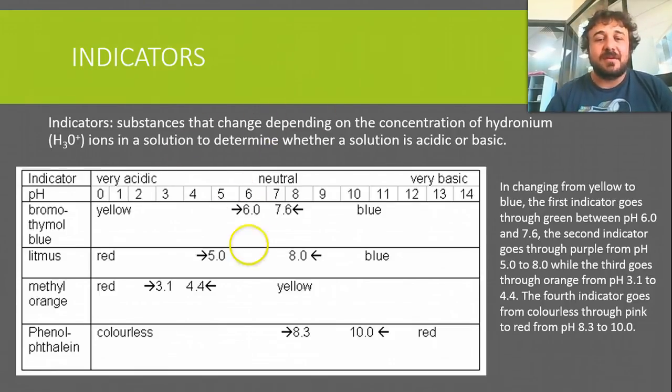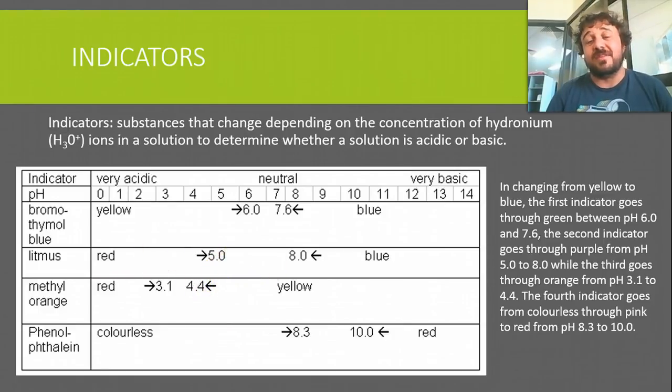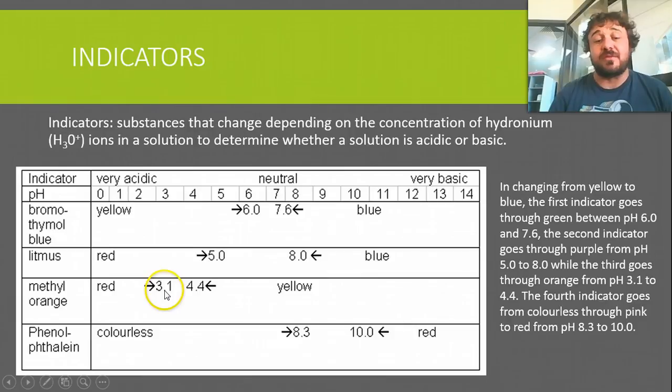We can see with this range, this one's actually fairly specific. The change is reasonably quick, whereas if we get to litmus, it's actually not very specific at all. If you've got anything between 5 and 8, it's really tough to tell if it's an acid or a base. Methyl orange is even more specific, and it goes from 3.1 to 4.4. That's a range of 1.3, and that's a fairly tight range.